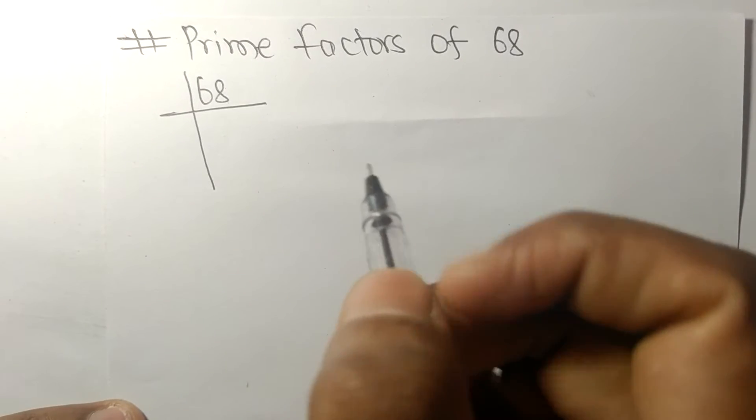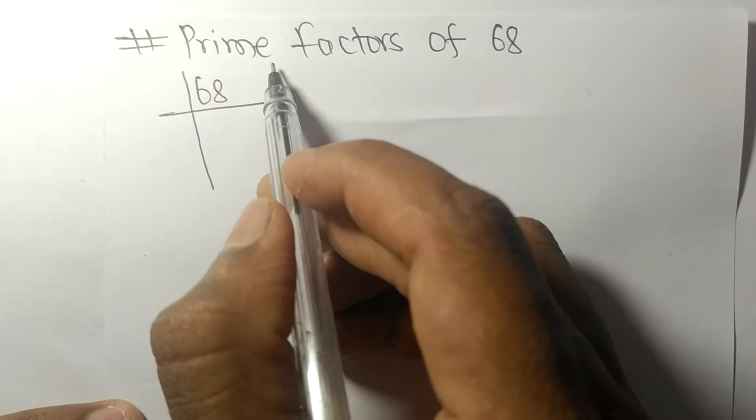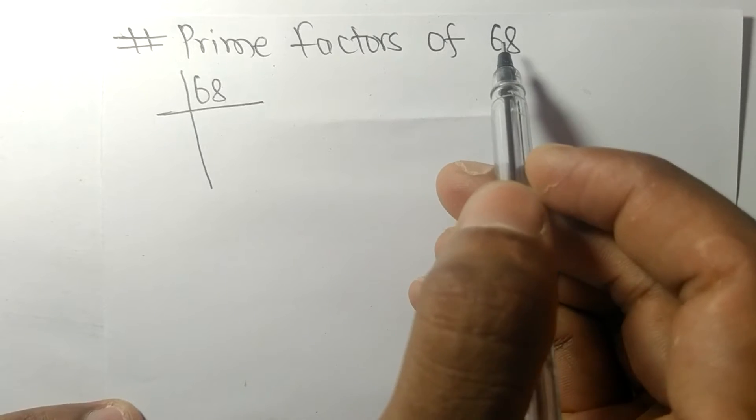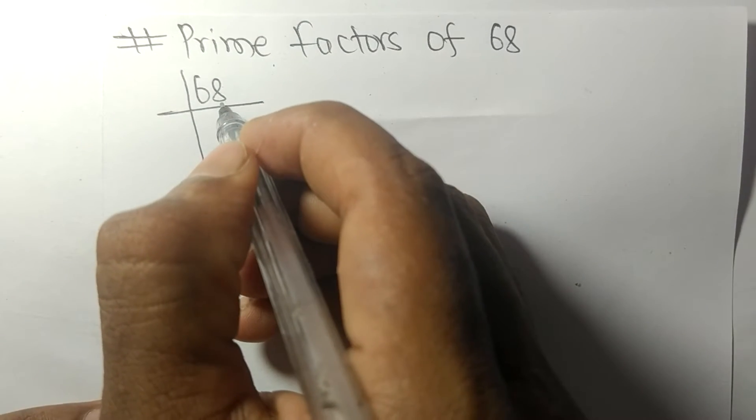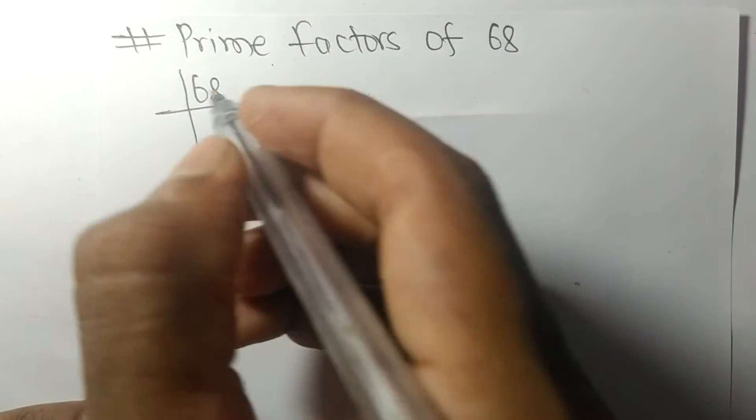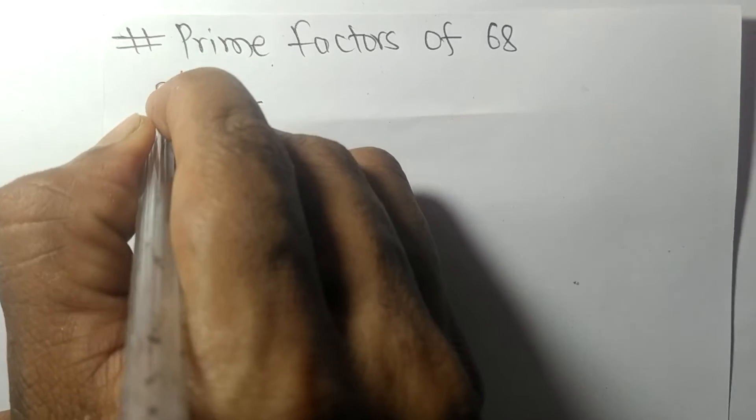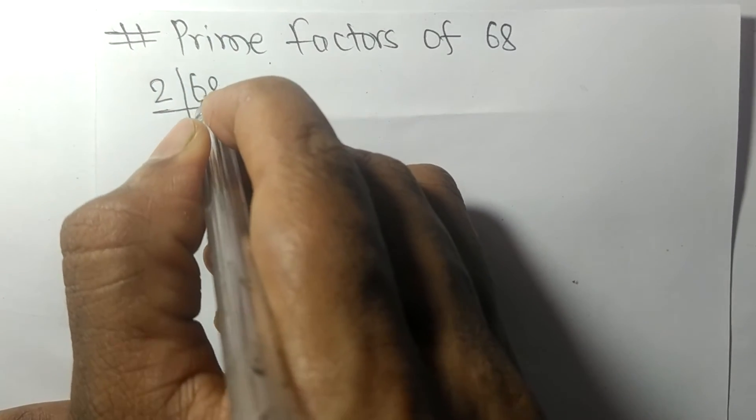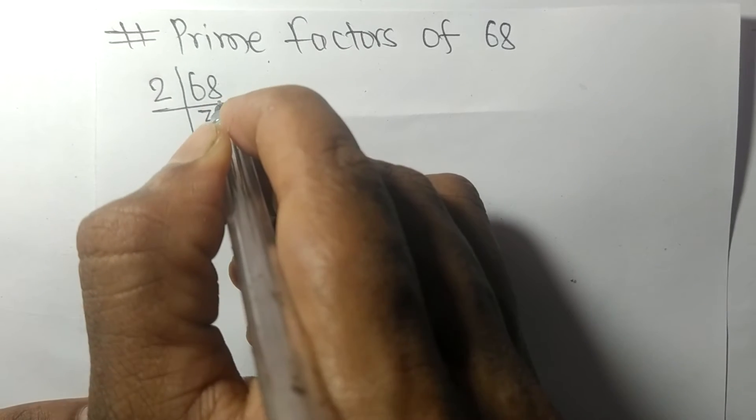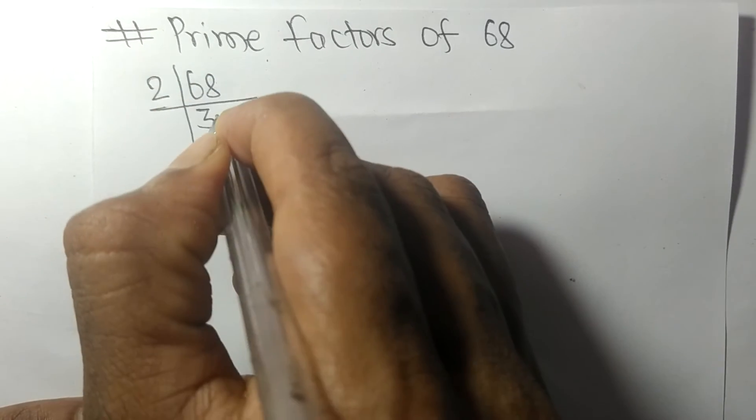Today in this video we shall learn to find the prime factors of 68. 68 is an even number, so it is divisible by 2. 68 divided by 2 we get 34.